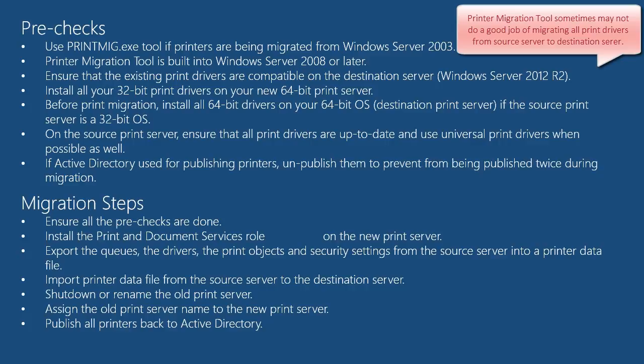Before you start the migration, you also need to install all your 32-bit print drivers on your destination print server, which will be running a 64-bit OS such as Windows Server 2008 R2 or later — these are the print drivers currently installed on the 32-bit OS of your source print server. You also need to install all 64-bit print drivers on your destination print server if your source print server is a 32-bit OS, by manually adding each 64-bit driver before you start the migration.